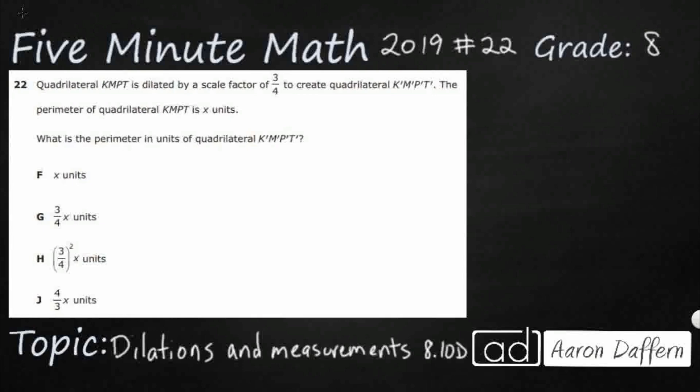So we have a quadrilateral KMPT and it's dilated by a scale factor of three-fourths to create KMPT prime, so it's going to get smaller because we're dilating it by something less than one. And so the perimeter of the original is x, so what is the perimeter of KMPT prime? So that's the question.